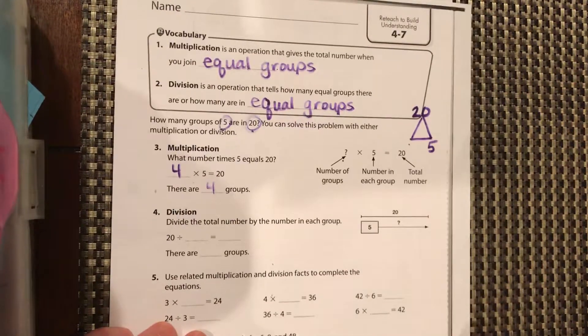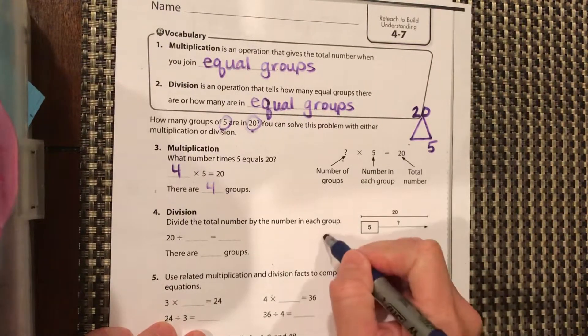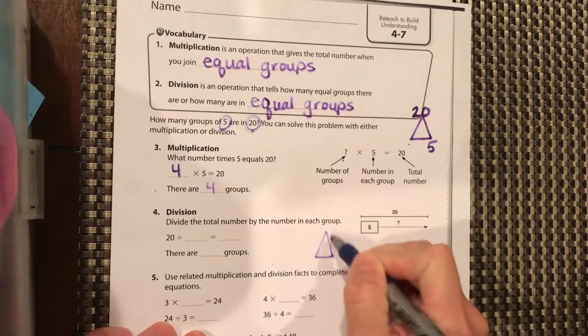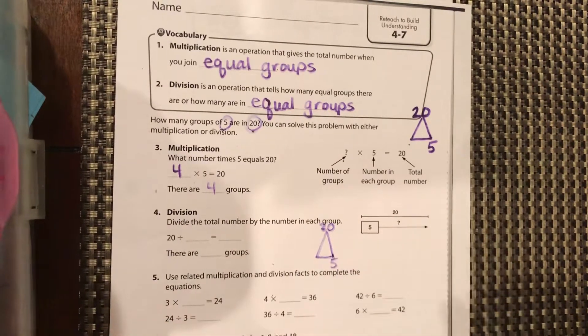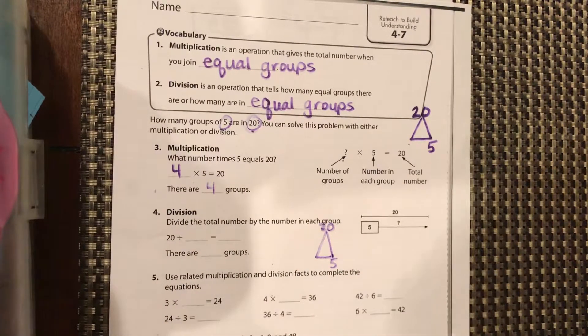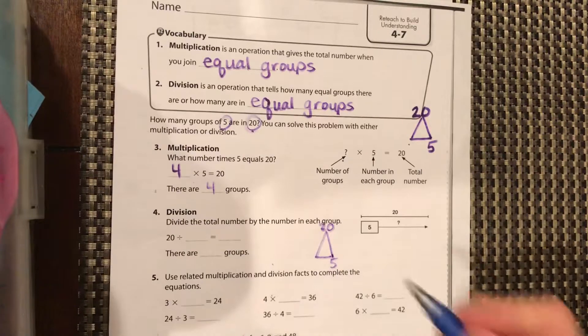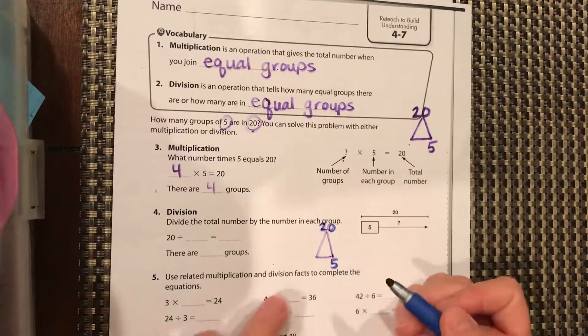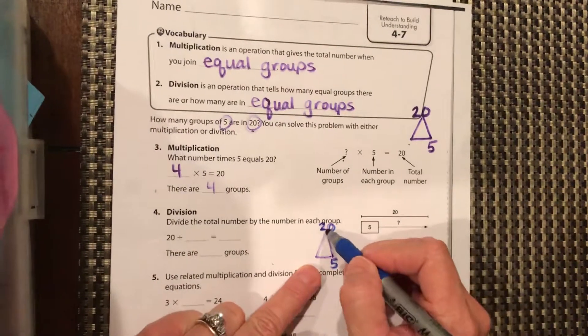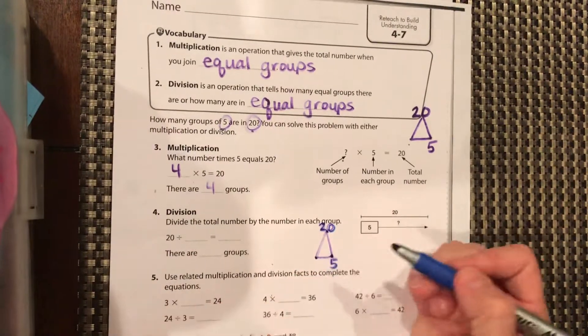Now same problem using division. Again, we have 20, we have a marker that's running out. So we have a total of 20, five in each group, we want to know how many groups. So we can do 20 divided by five equals what?